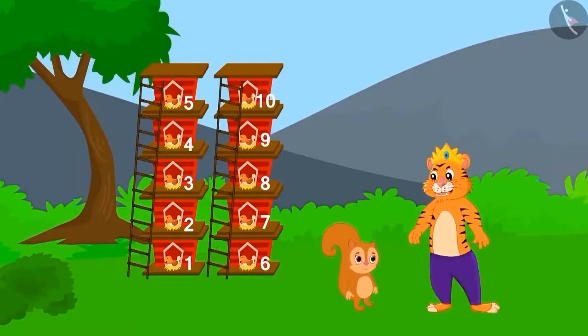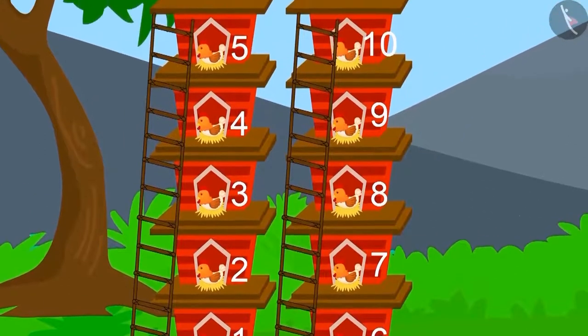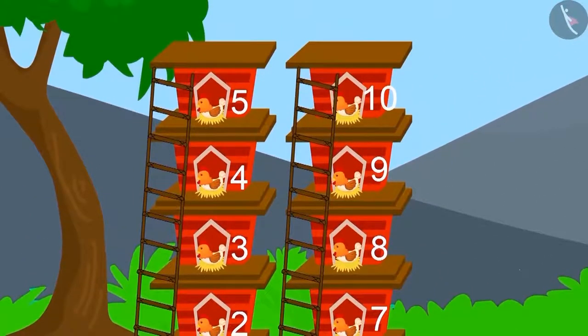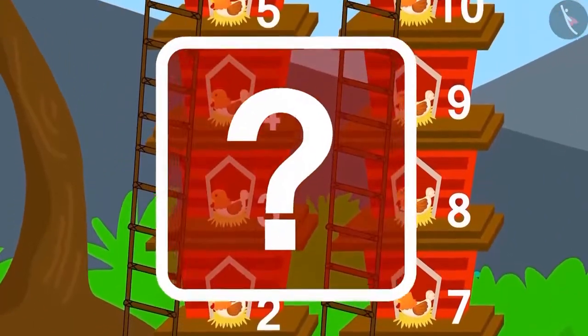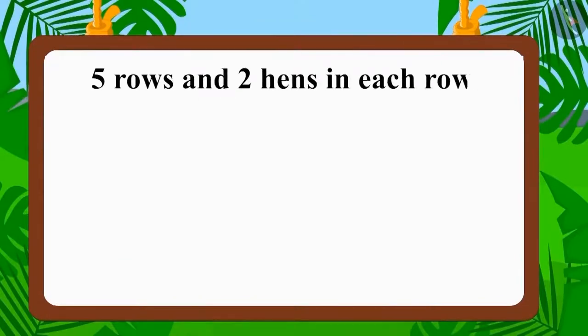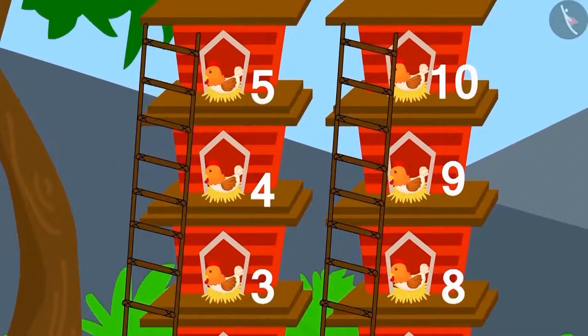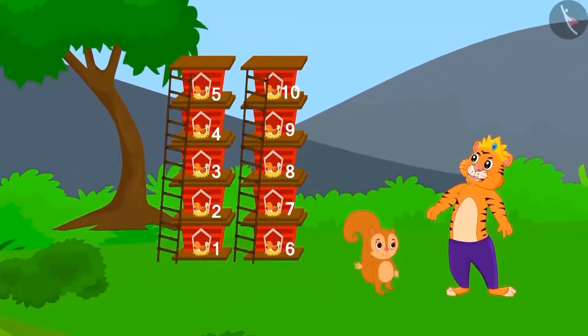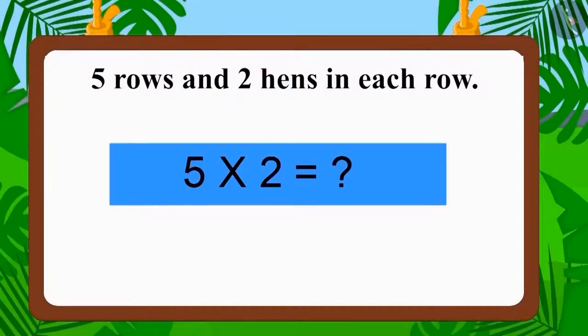Now, the king arrived to see the house built by Chanda. Chanda had made use of five rows to build the house like this for hens. And each row had two hens in them. Was the house built by Chanda correct? Five rows and two hens in each row. Is the number of hens in each row equal? Yes! Does the number of hens in the house equal to ten?